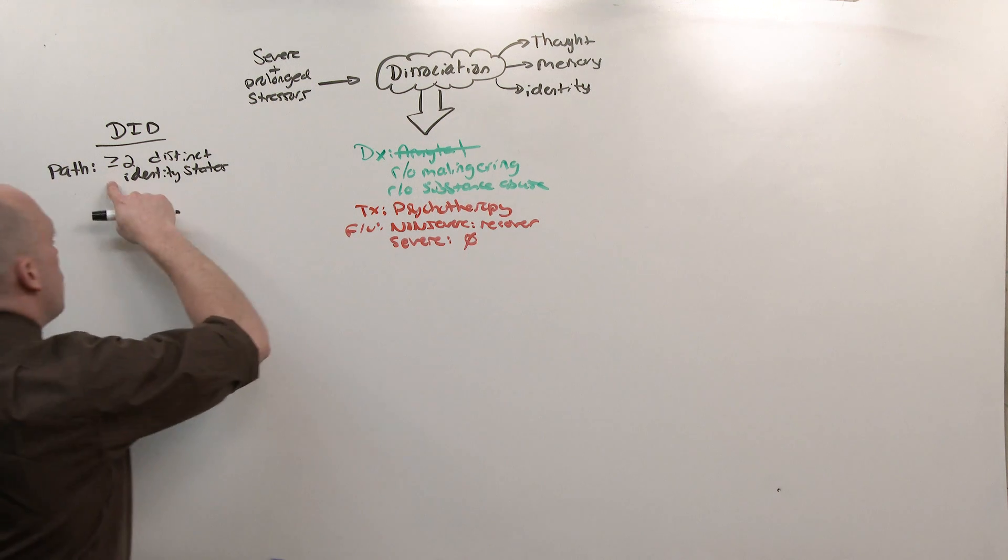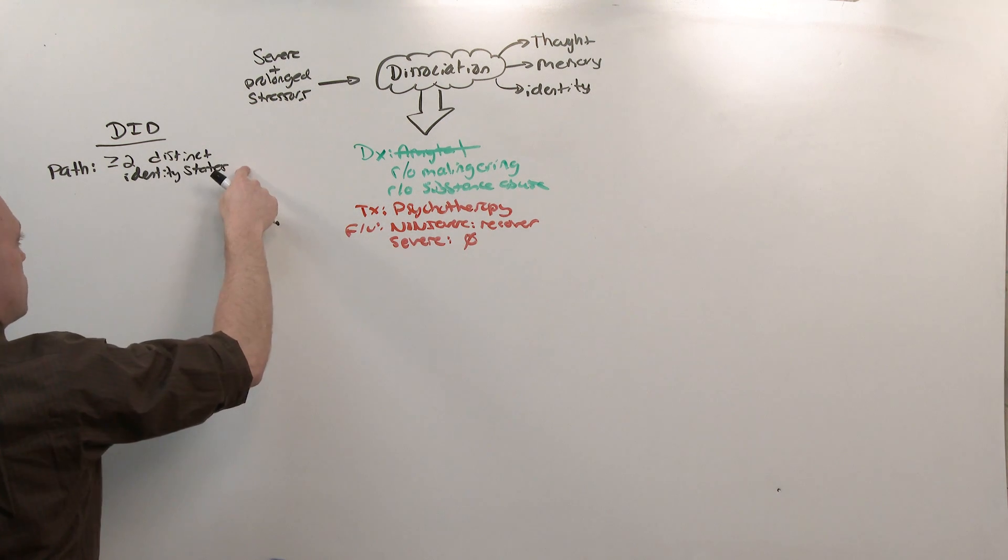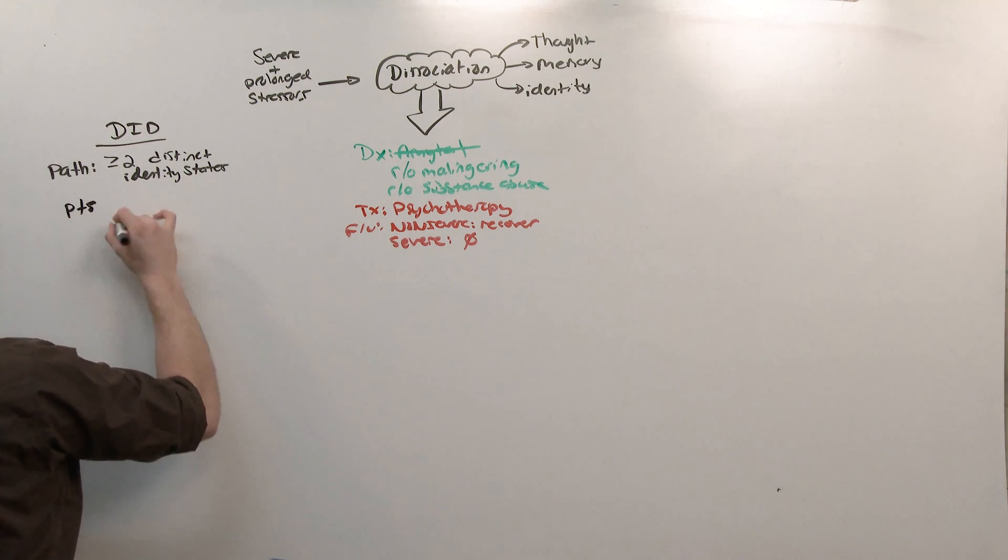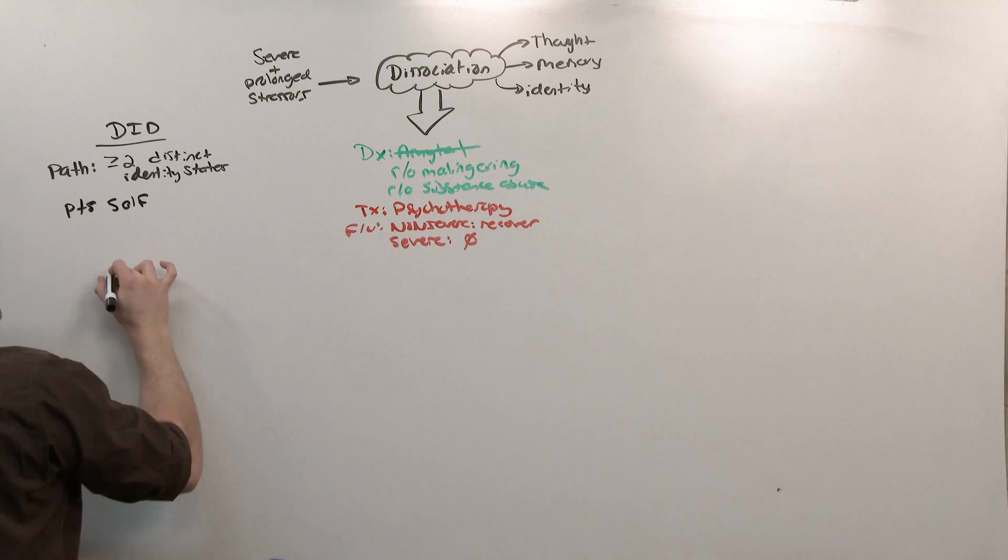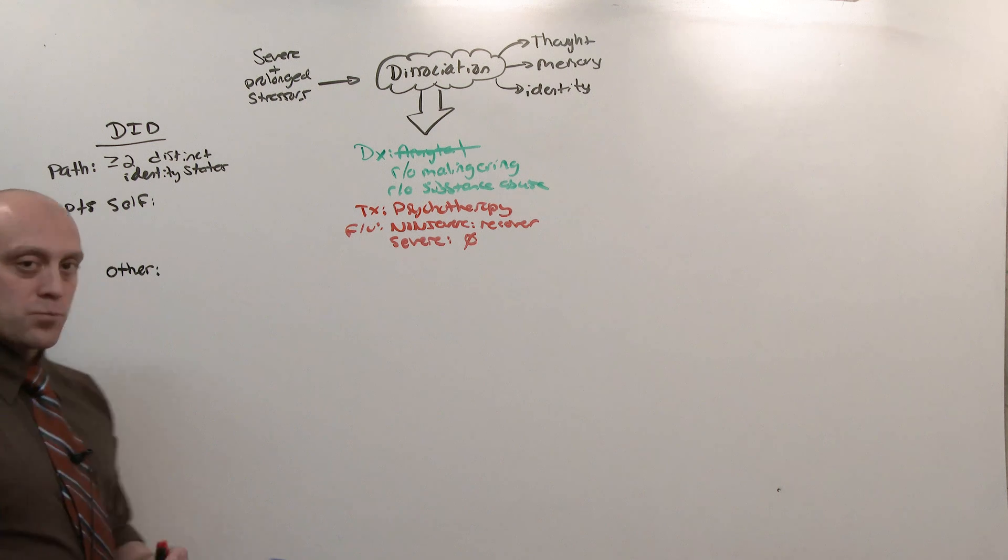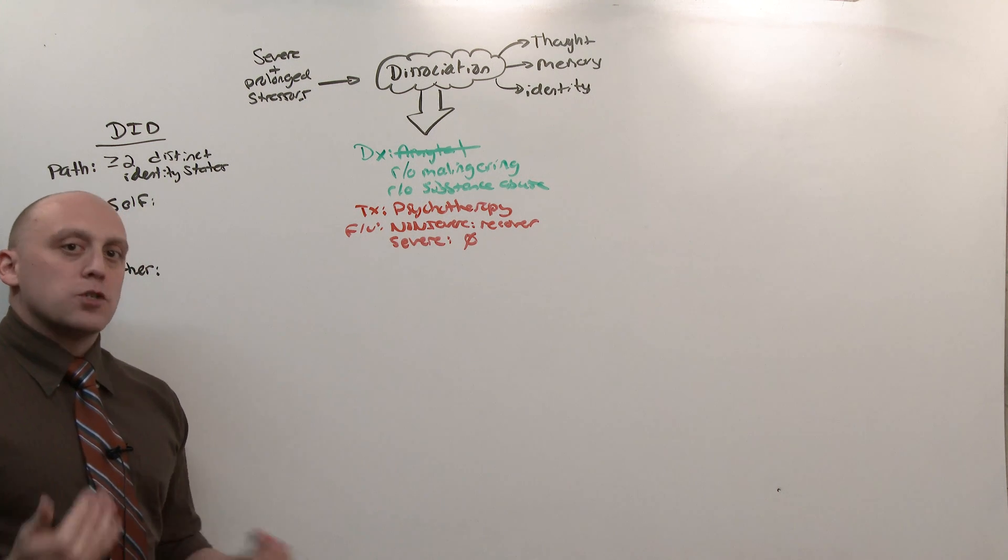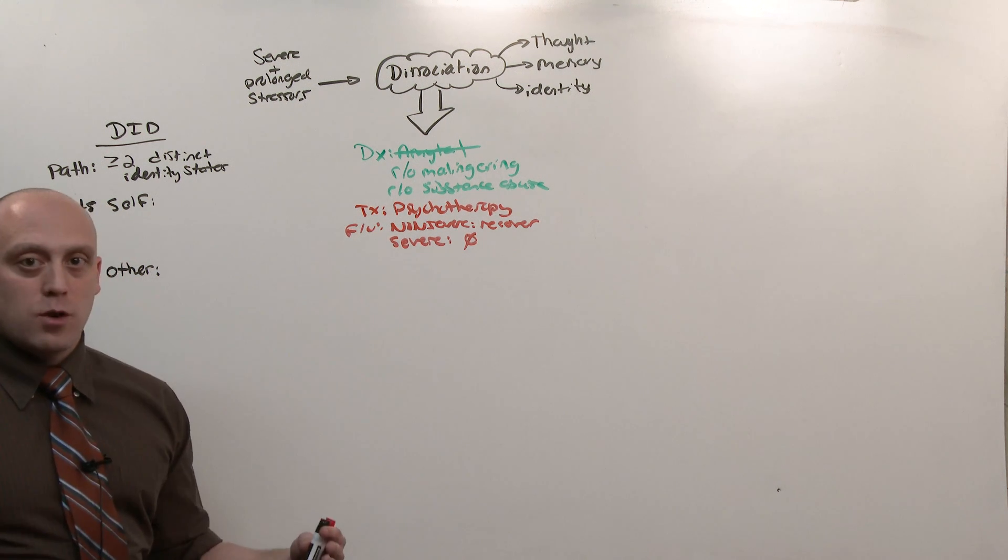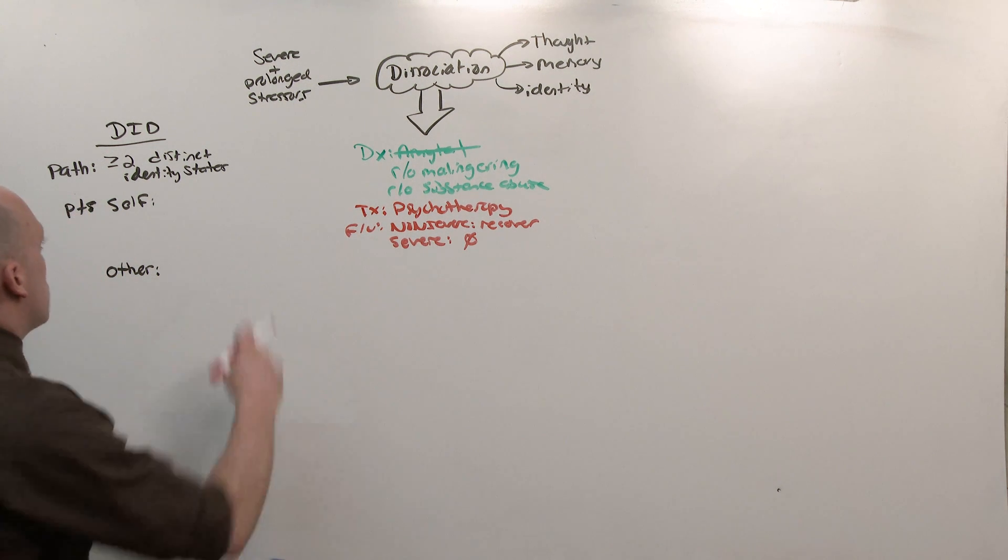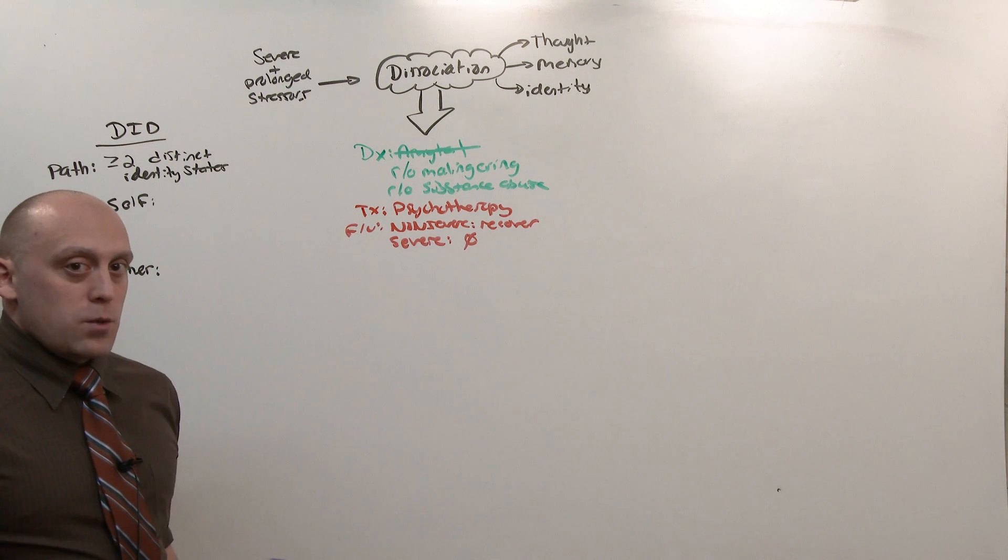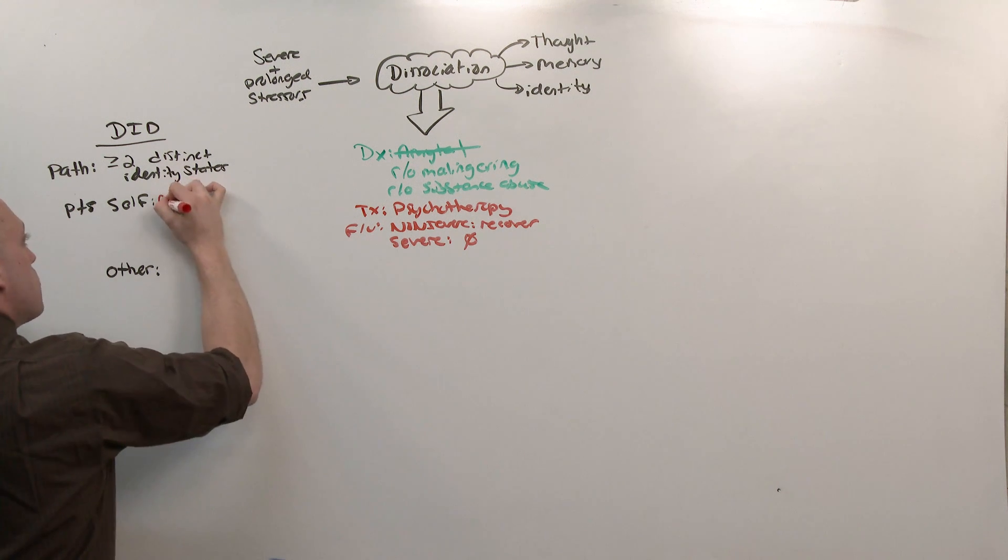So what you're looking for is two or more distinct identity states. And the way the patient is going to present is very obvious on the test. What you're going to do is break it down into the self, that is what the person themselves experiences, and the other, what other people witness in them. The person is going to go between identity states. And they were created so that the primary self doesn't experience the trauma. So when that additional identity takes over, the person, the primary self, doesn't know what's going on or remember.